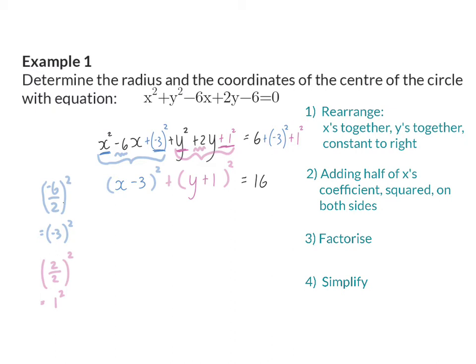Now we have our equation back into the standard form, so we can immediately see the center and the radius. Our center will be at (3, -1), and our radius will be 4.